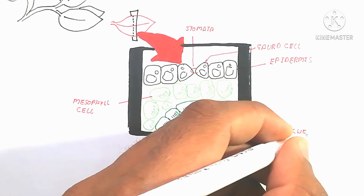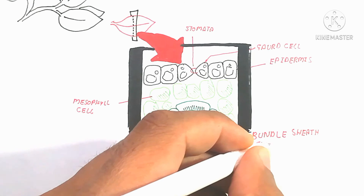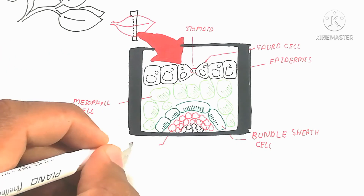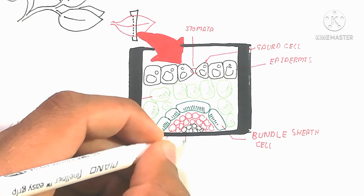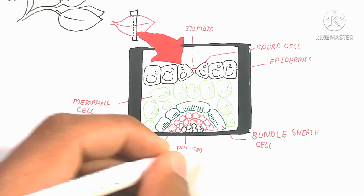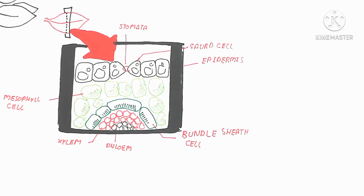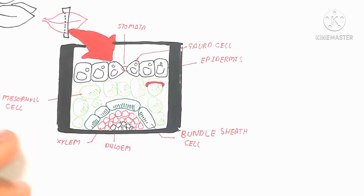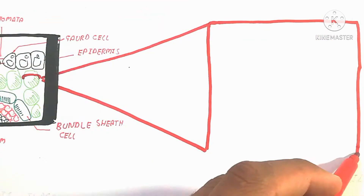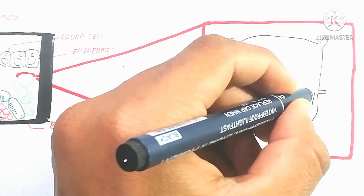The leaf mostly contains spongy mesophyll cells. There is xylem and phloem, known as the vascular bundle, which is surrounded by the bundle sheath cells — a major character of C4 plant anatomy.